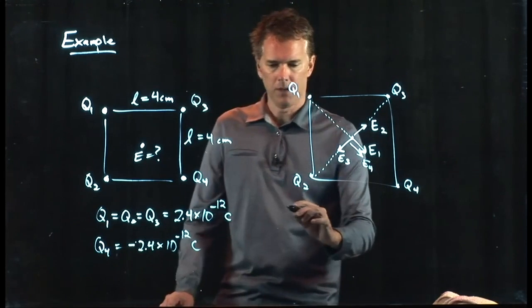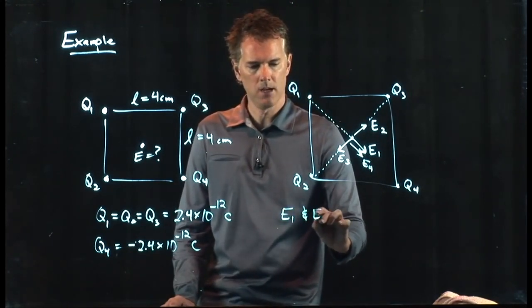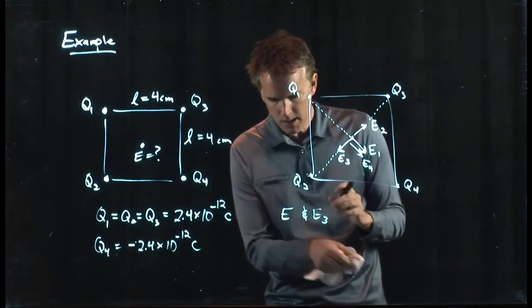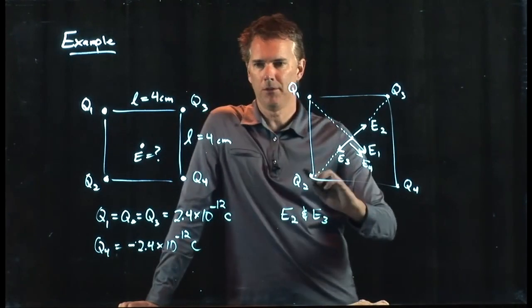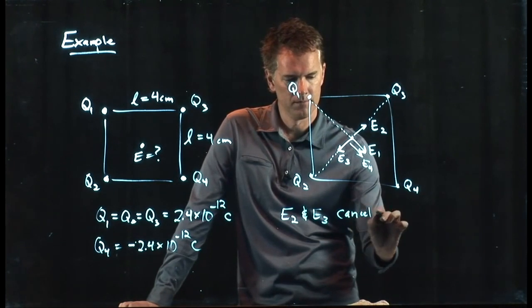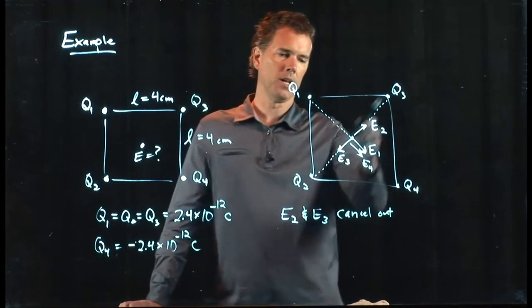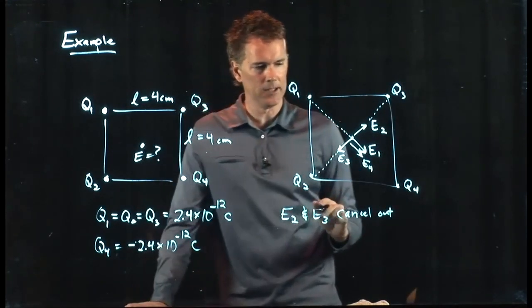So look what happens. E1 and E3—I'm sorry, not E1 and E3—E2 and E3 are equal and opposite. They cancel. E2 is pointing up to the right, E3 is down to the left, and so those two exactly cancel out.